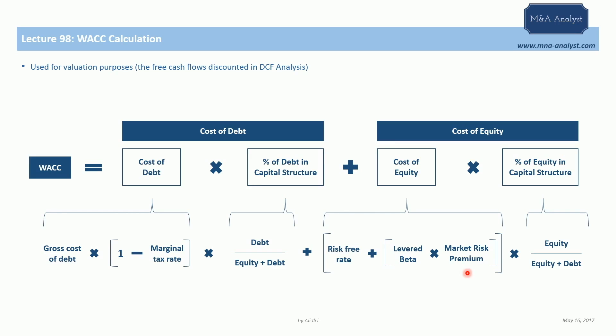A higher beta drives our cost of equity upwards. We already mentioned that we find the company-specific risk premium with the beta component, so beta has to reflect the capital structure of the target company. That is what is meant by a levered beta — it reflects the company's level of leverage. The beta is levered with the company's capital structure.